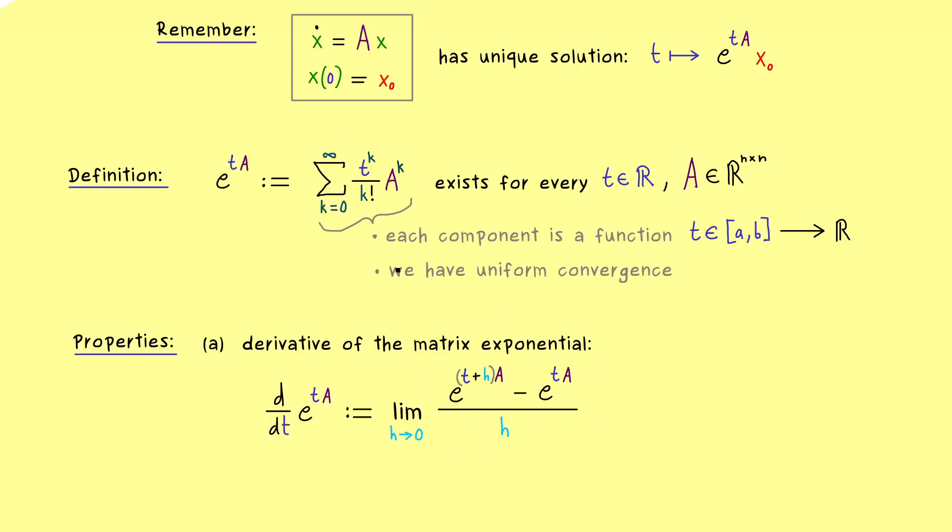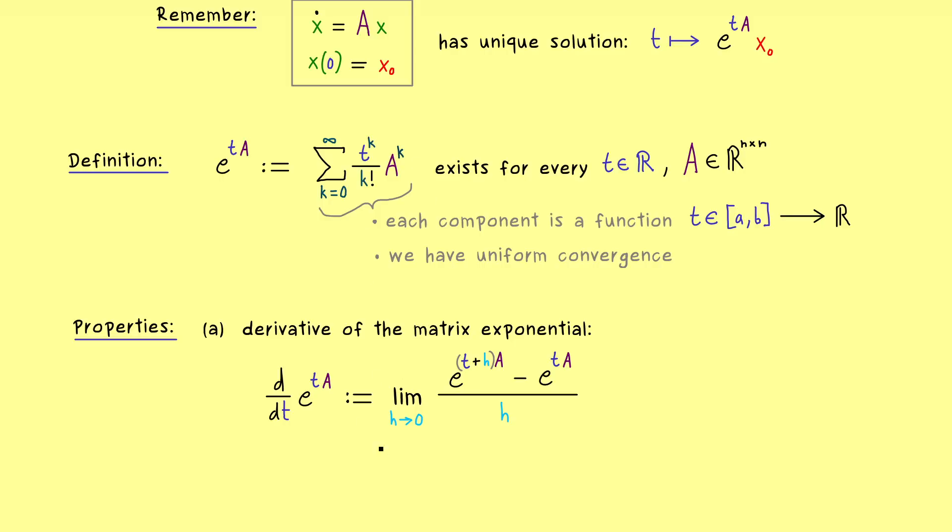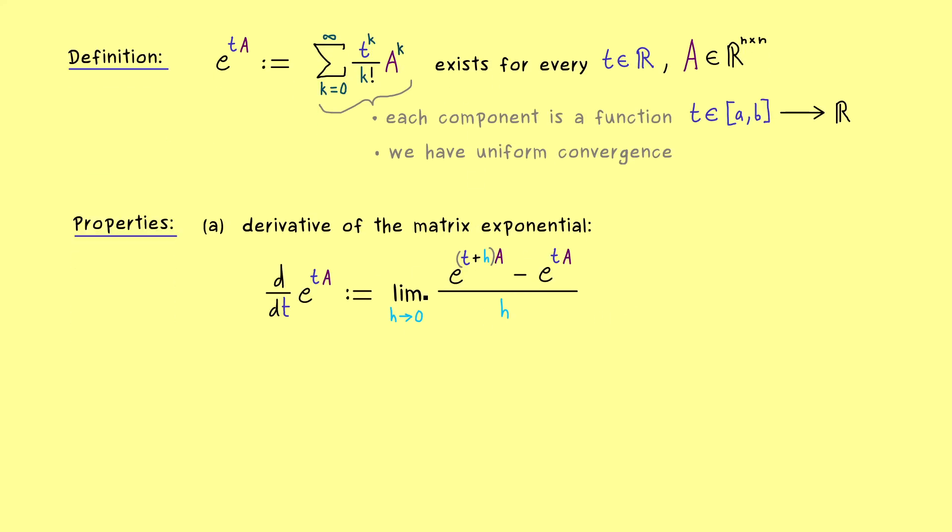And in the same way as before, we have two possibilities to interpret this limit process. On the one hand we can see it as a limit in the space of matrices with a given matrix norm. Or on the other hand we can just see it as a standard limit process in each component of the matrix. In the end both things are equivalent and you should just see that this limit process is well defined. And moreover we can easily calculate it.